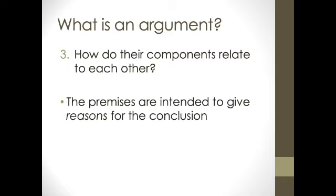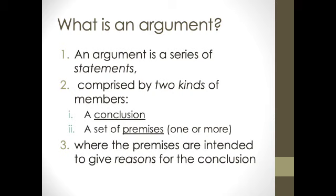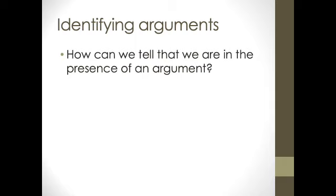Finally, the relation between the components is reason giving. The argument says that the premises are intended to give reasons for the conclusion. In short, an argument is a series of statements comprised by two kinds of members, namely a conclusion and a set of premises, which can be one or more, where the premises are intended to give reasons for the conclusion.